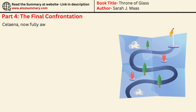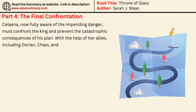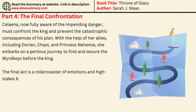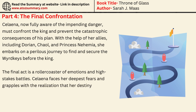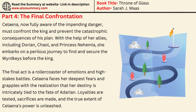In Part 4, Selina, now fully aware of the impending danger, must confront the king and prevent the catastrophic consequences of his plan. With the help of her allies — including Dorian, Kale, and Princess Nehemia — she embarks on a perilous journey to find and secure the wordkeys before the king. The final act is a rollercoaster of emotions and high-stakes battles. Selina faces her deepest fears and grapples with the realization that her destiny is intricately tied to the fate of Adarlin. Loyalties are tested, sacrifices are made, and the true extent of Selina's power is unleashed.